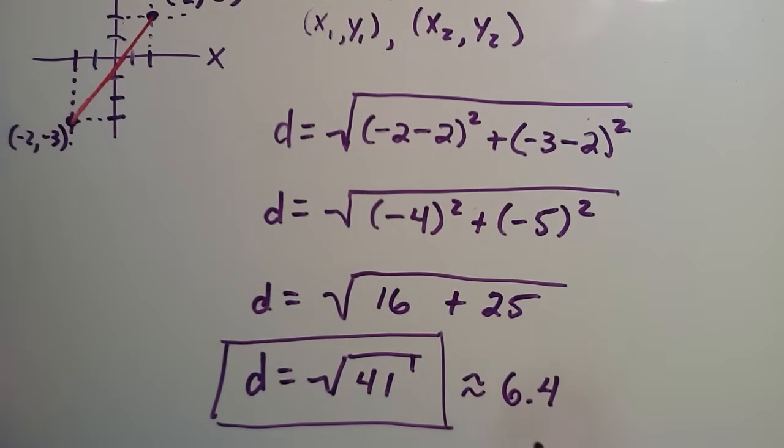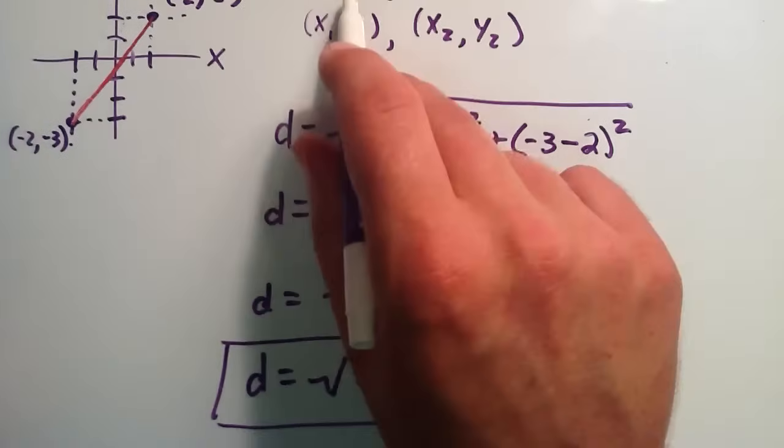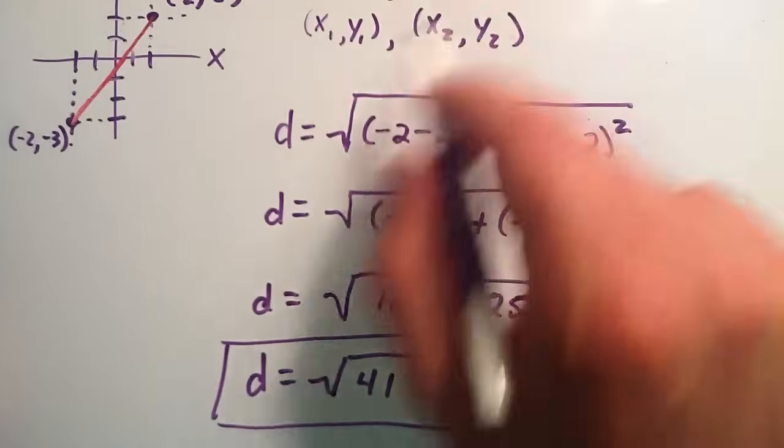If you want an exact answer, then write it in this form, square root of 41. This is the exact distance. This is an approximate distance between the points (2,2) and (-2,-3).